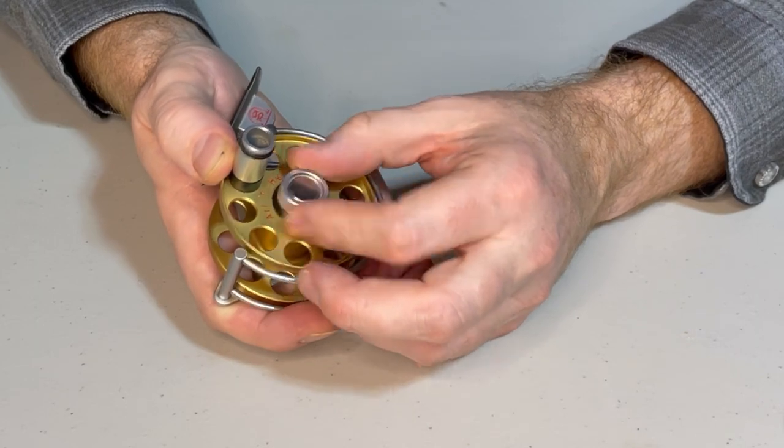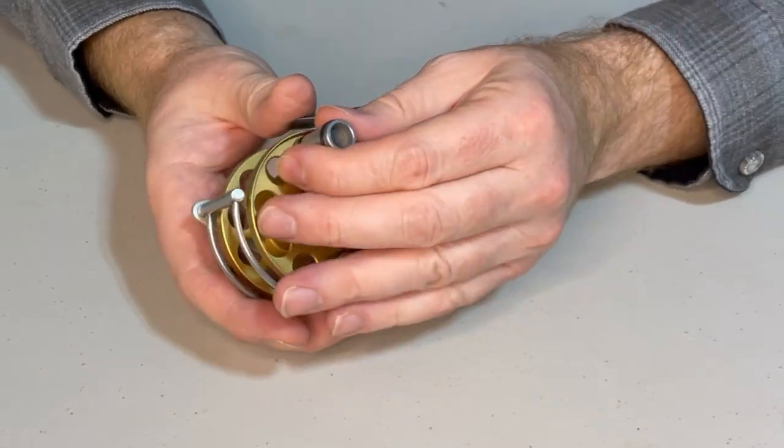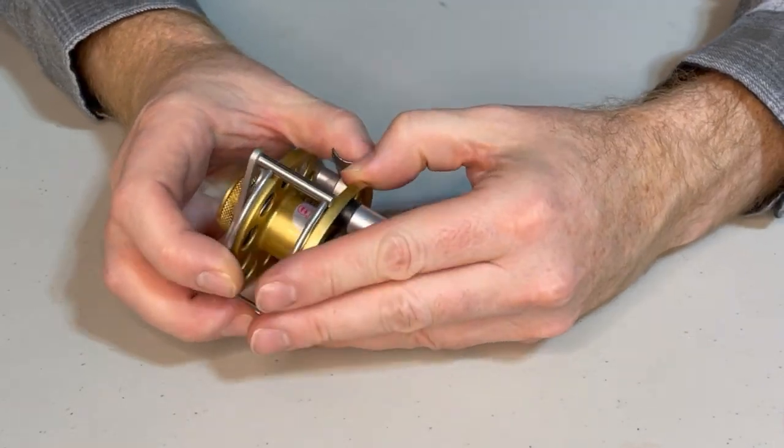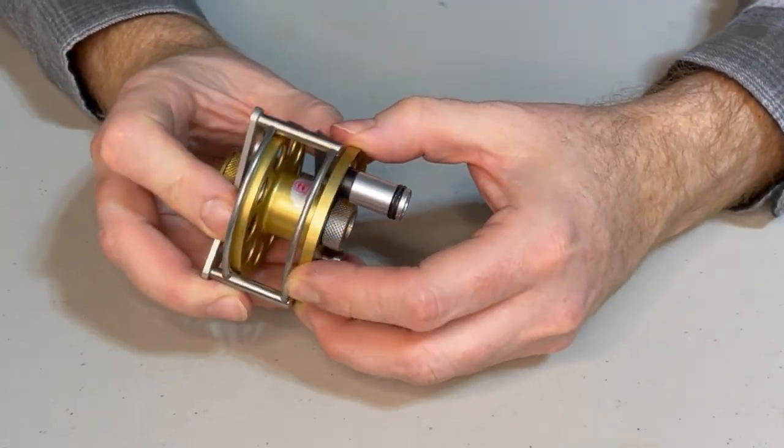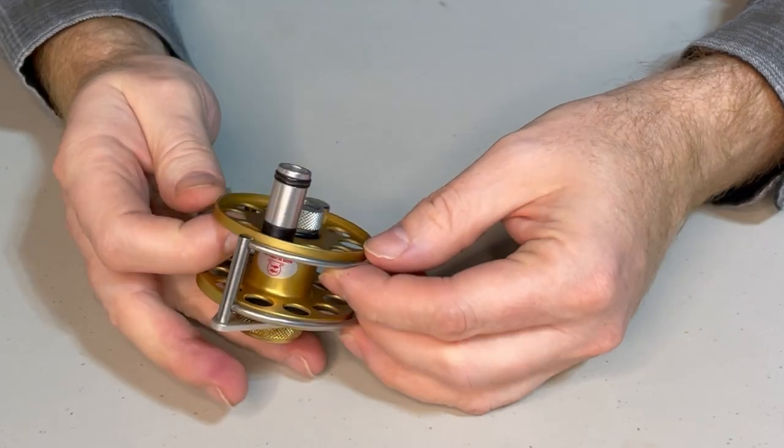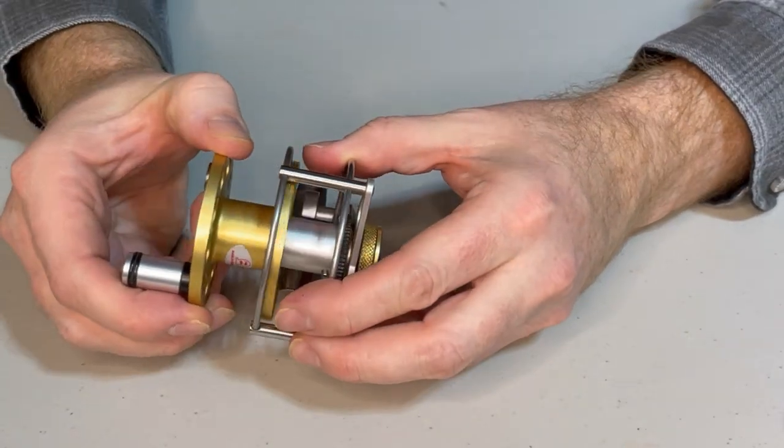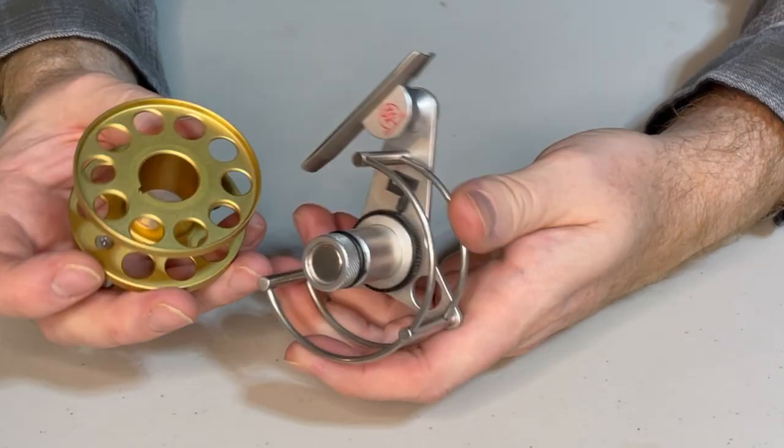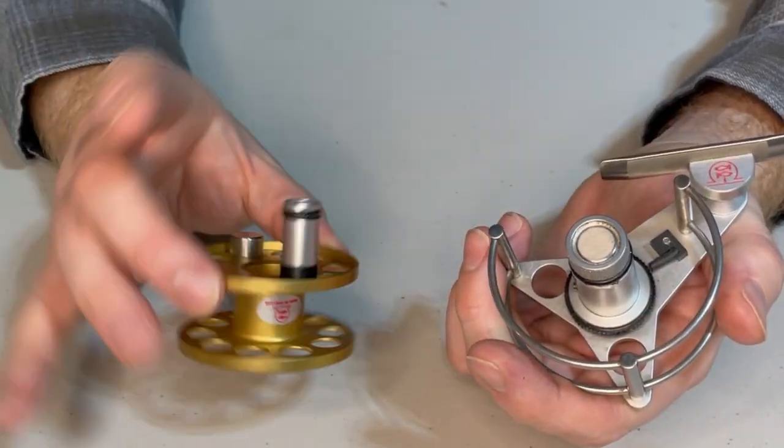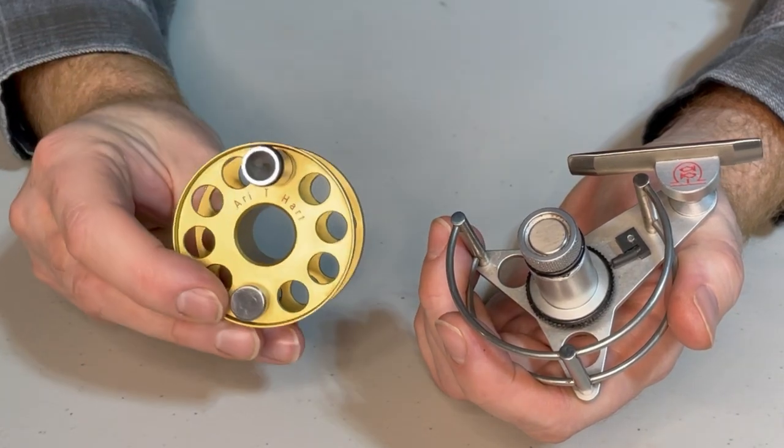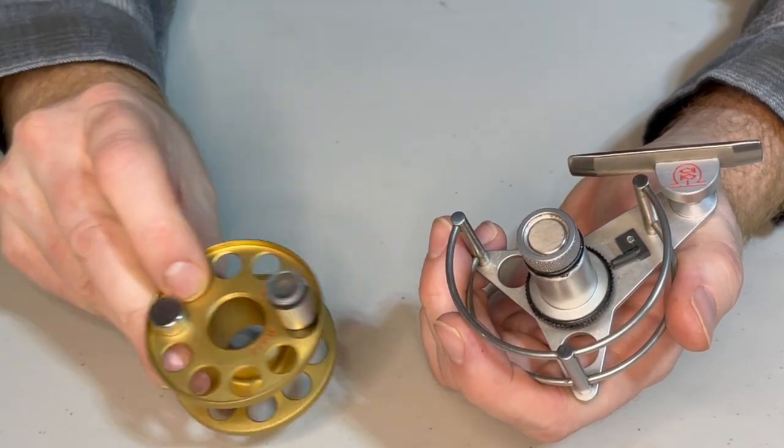So we can take off the spool here. This is a golden spool. Let's see if I can figure this out. Okay very cool. Spool is actually quite minimal, just itself. Really not much to that spool.